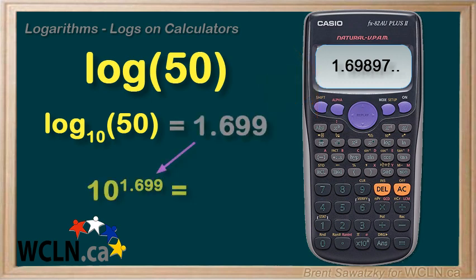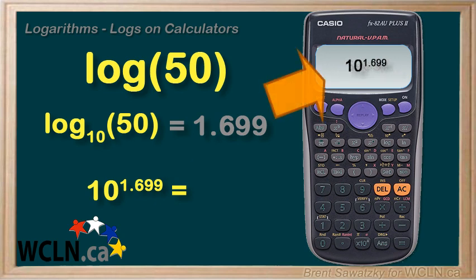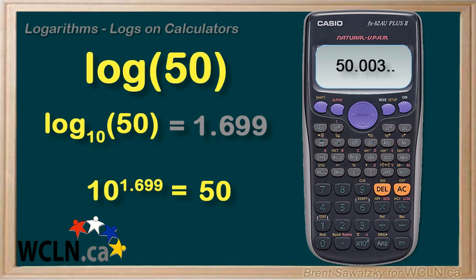Let's test our result though. So we should be able to calculate 10 to the power of 1.699. And we get, with a tiny bit of rounding again, 50. So works as expected.